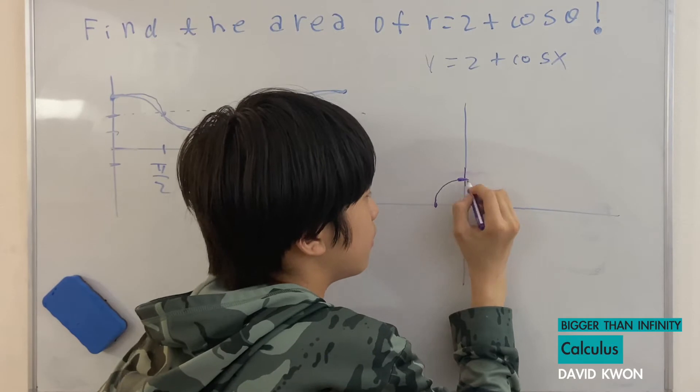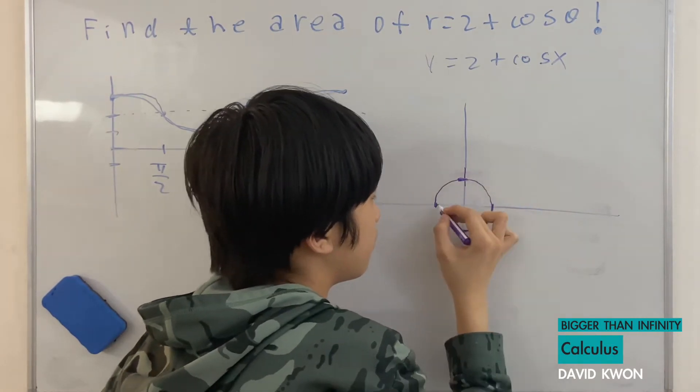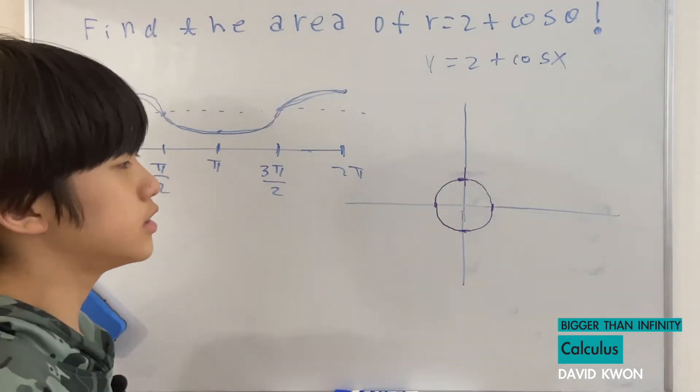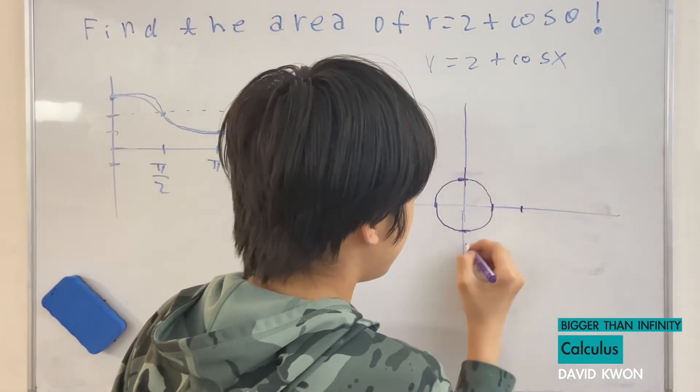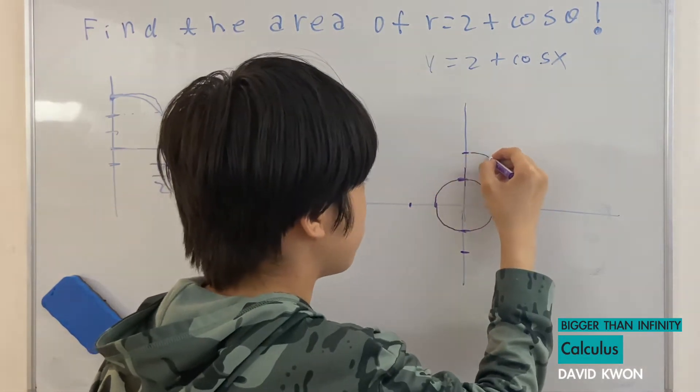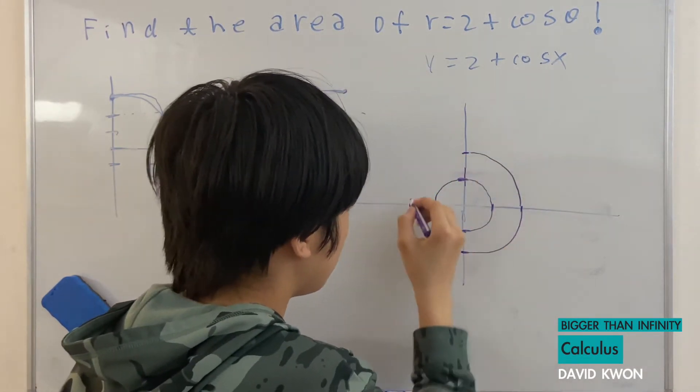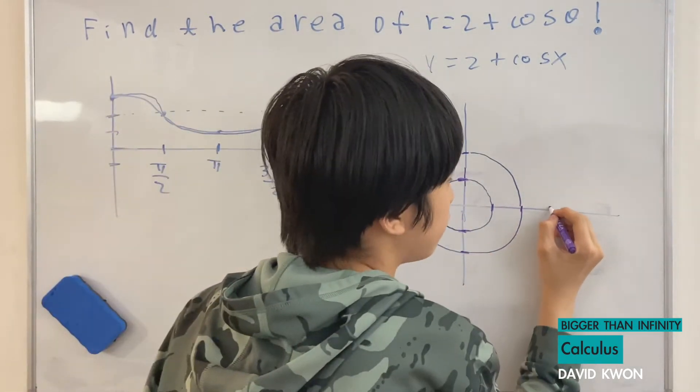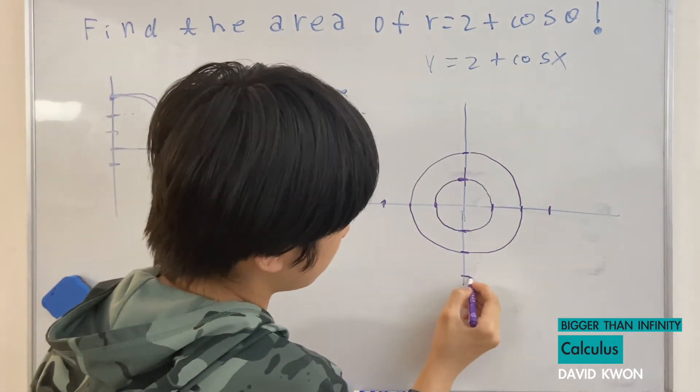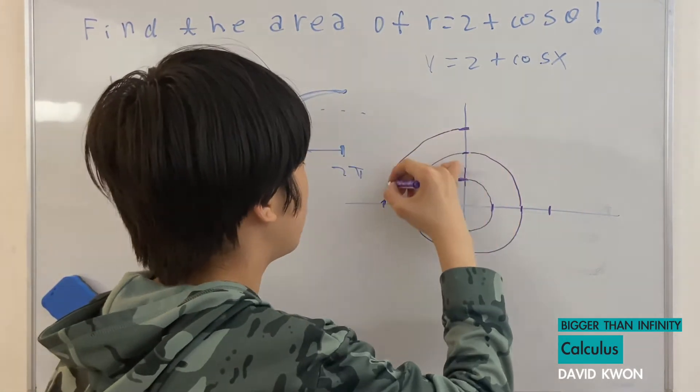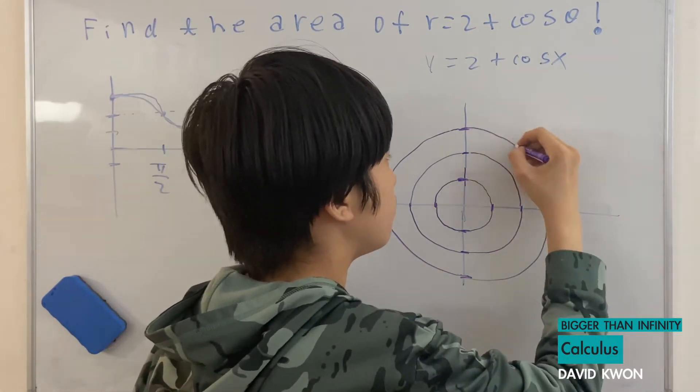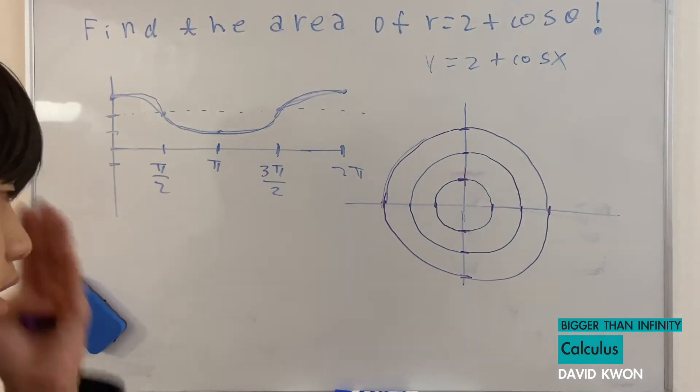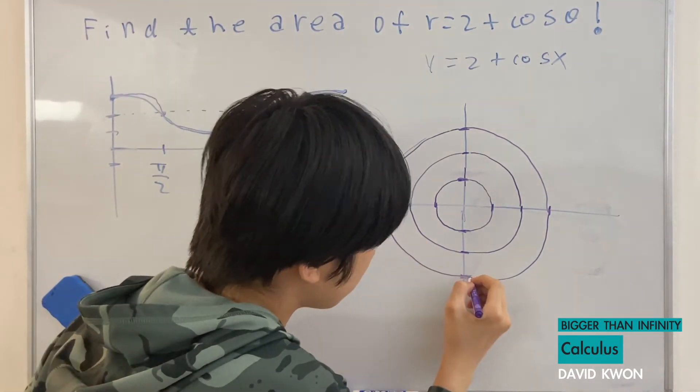This is radius 1. And let's draw the radius 2. So perfect. And now we have a circle that's radius 3 now. I'm not the best circle drawer, but it is very acceptable in my opinion.